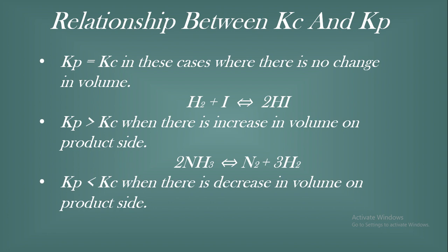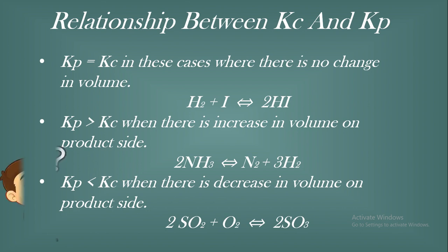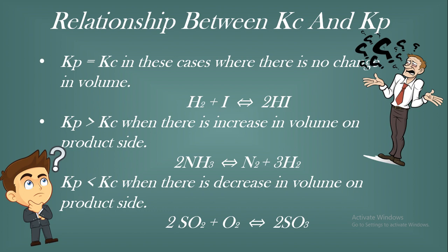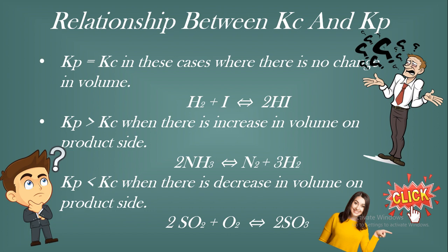If I just read these three points, I don't really understand the relationship between Kc and Kp — I'm confused. Does Kp depend on the volume of the product side? Let's start from scratch to understand the relationship between Kc and Kp. Please subscribe to my channel, and let's begin.